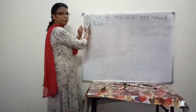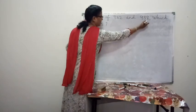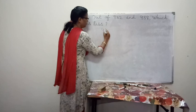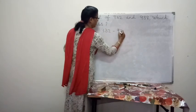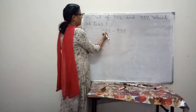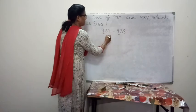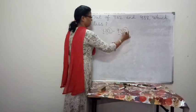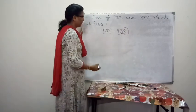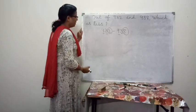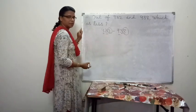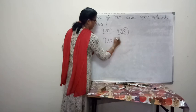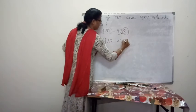Problem number 3: Out of 932 and 938, which is less? The given numbers are 932 and 938. Here, the digits in the hundreds place and tens place are equal. So we compare the digits in the ones place. 2 is smaller. 2 is less than 8. Therefore, 932 is less than 938.